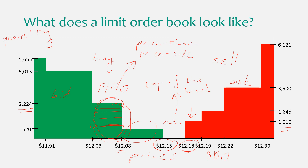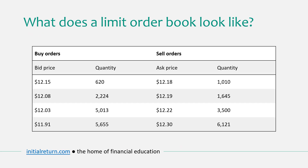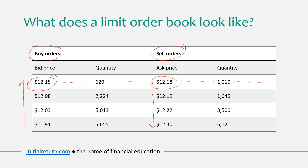Let me show you another representation of an order book. It doesn't have to look like a graph — it can also be in the shape of a table or list, containing exactly the same information. We've got buy orders on one side and sell orders on the other. Prices go up in one direction on each side. The highest bid is at the top and the lowest ask is at the top, which is why we use the term 'top of the book.'